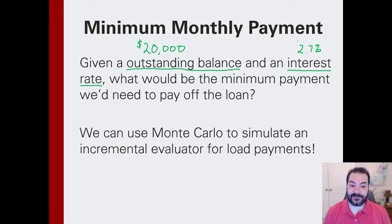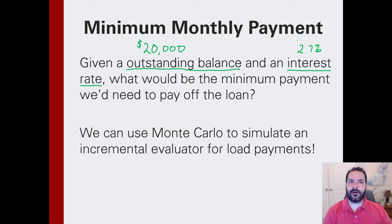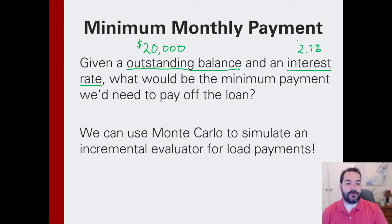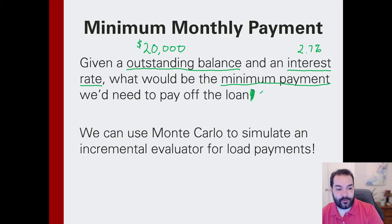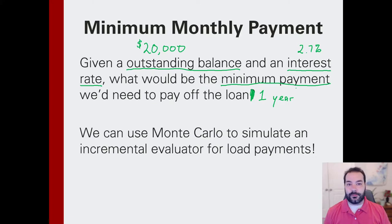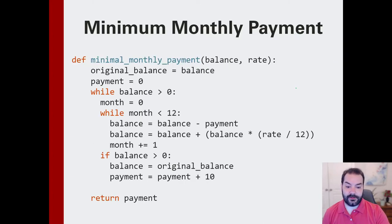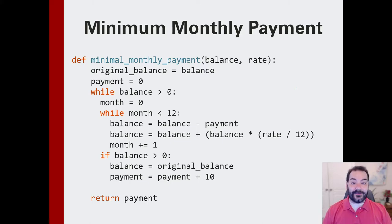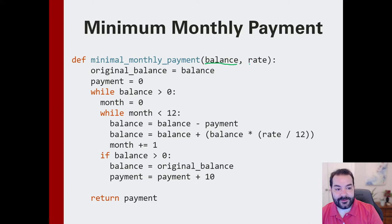Given that situation, we could ask a simple question. Without using financial formulas that give us an approximation, what would be the minimum amount I would need to pay if I wanted to pay this off in, let's say, one year? I know that's a lot to pay off in one year, but we're playing off theory here. We have a simple formula for this, and we use something like Monte Carlo to guess effectively.